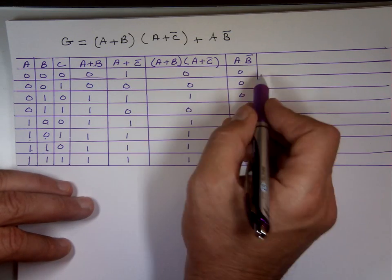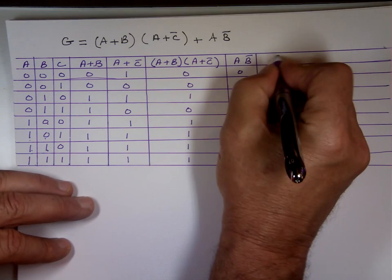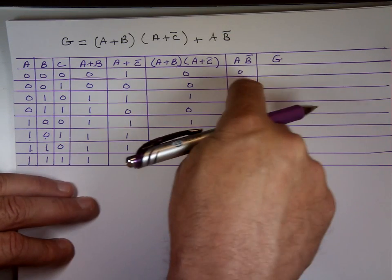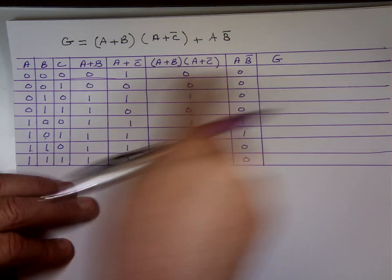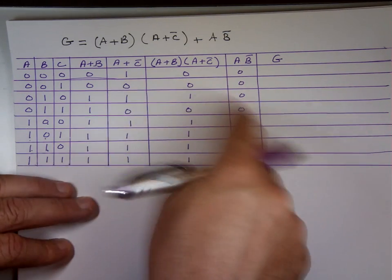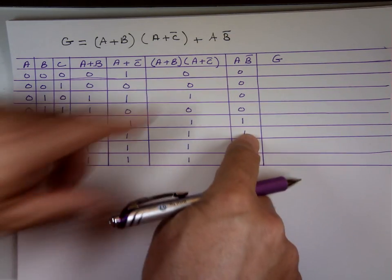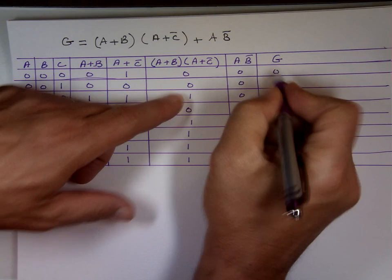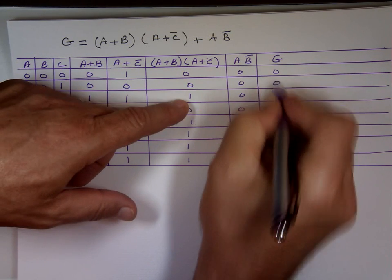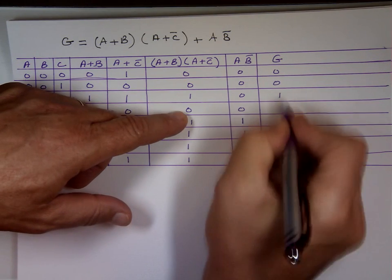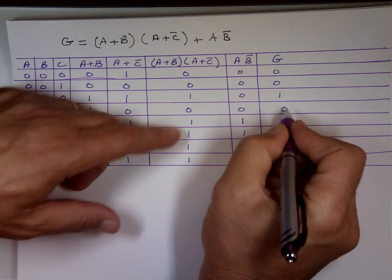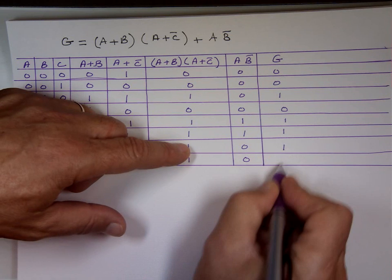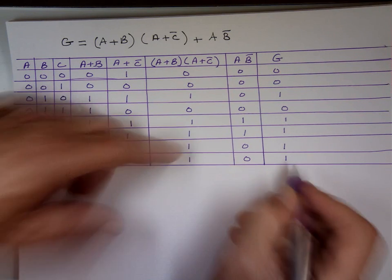Now the last column is the G function, which is the OR — the sum — of all the terms together. The result is: zero, zero, one, zero, one, one, one, one. That's how they want us to do it.